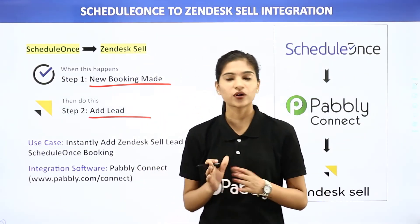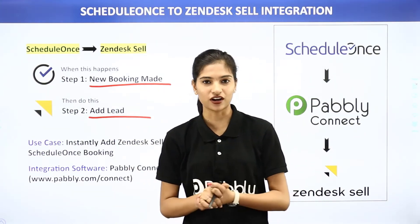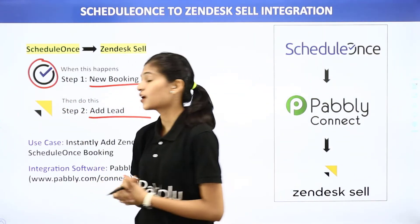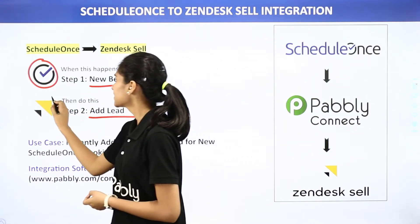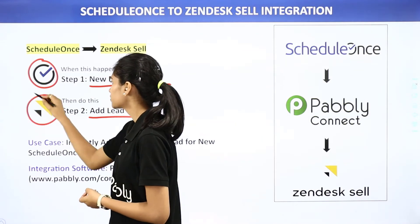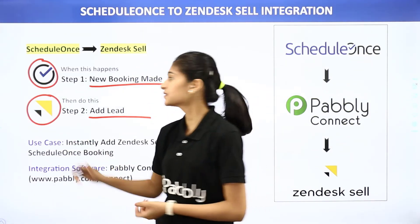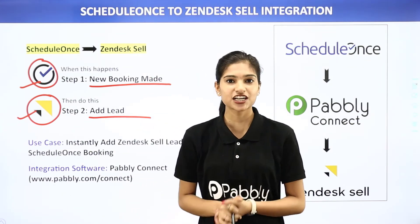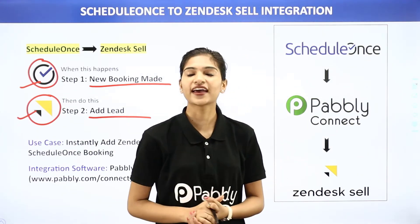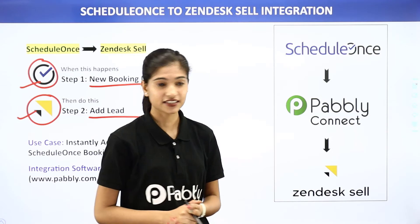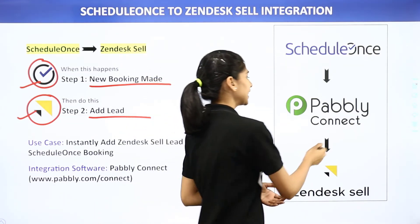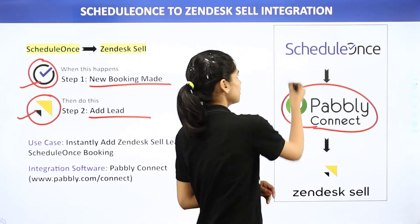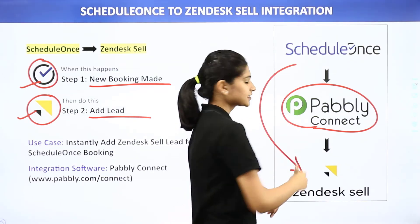Now let us know what these two software applications are all about. ScheduleOnce is a cloud-based scheduling solution, whereas Zendesk is a Salesforce automation tool. The issue here is that ScheduleOnce and Zendesk Sell don't have any integration between them, and that is why we are going to use Pabbly Connect — an integration software which will help you to transfer data from ScheduleOnce to Zendesk Sell.